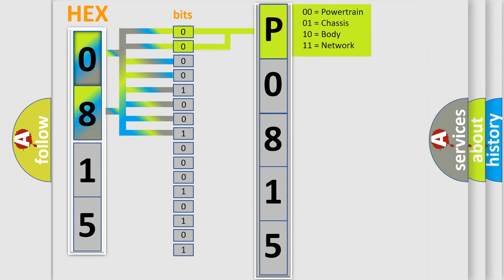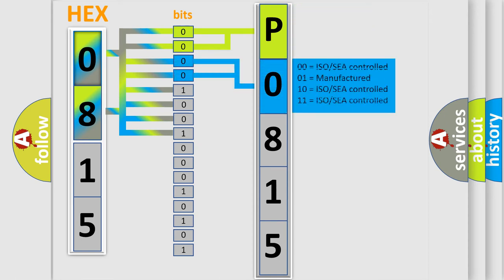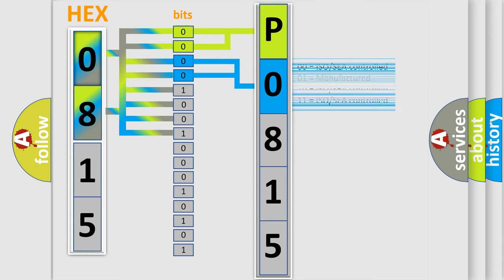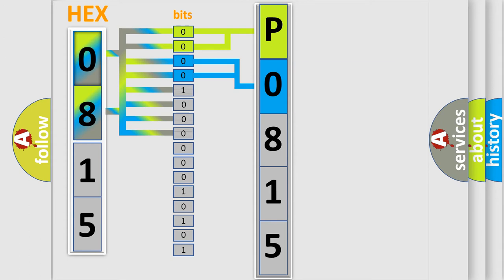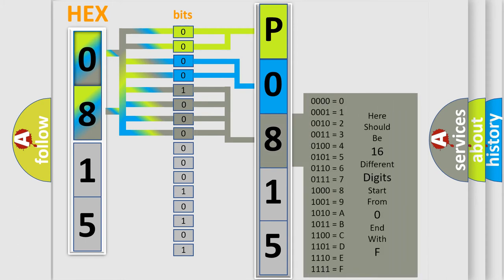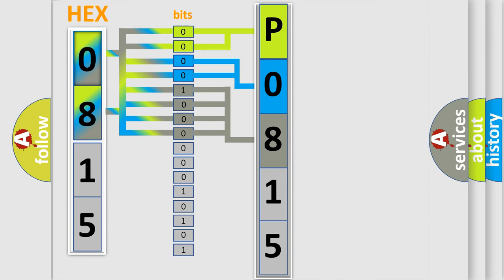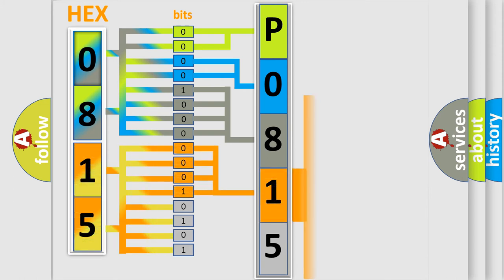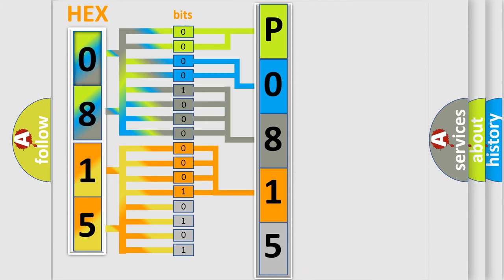By combining the first two bits, the basic character of the error code is expressed. The next two bits determine the second character. The last bit styles of the first byte define the third character of the code. The second byte is composed of a combination of eight bits. The first four bits determine the fourth character of the code, and the combination of the last four bits defines the fifth character.